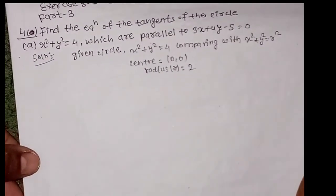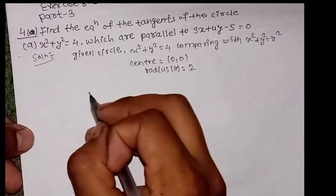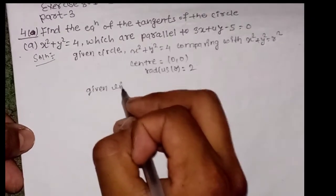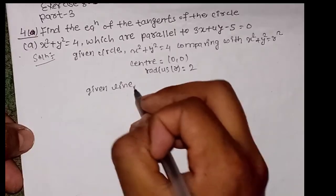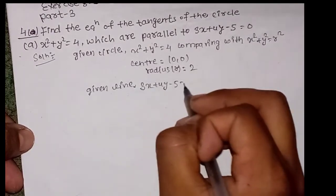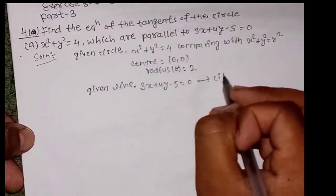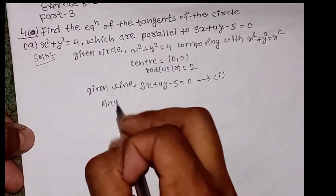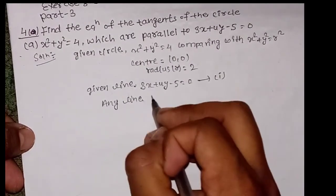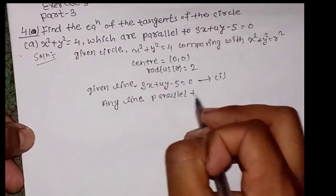The equation of any line parallel to the given line 3x + 4y - 5 = 0 will have the same coefficients, only the constant changes. So the equation of the tangent line is 3x + 4y + k = 0, which is equation 2.